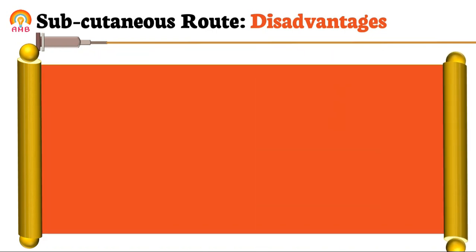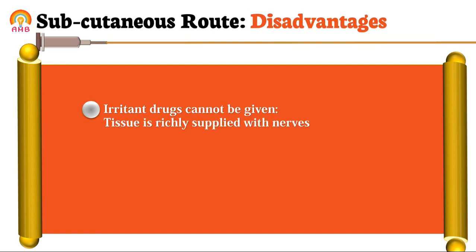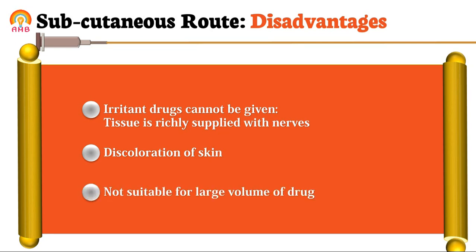Now the disadvantages of subcutaneous route. Since subcutaneous tissue is rich in nerve supply, irritant drugs cannot be given by this route, as they can irritate the nerves present there. The second disadvantage is that discoloration of skin is possible if drug is injected at the same site repeatedly — hence the site of administration must be changed continuously to avoid skin discoloration. The last disadvantage is that it is not suitable for large volumes; only small volumes can be administered by this route.